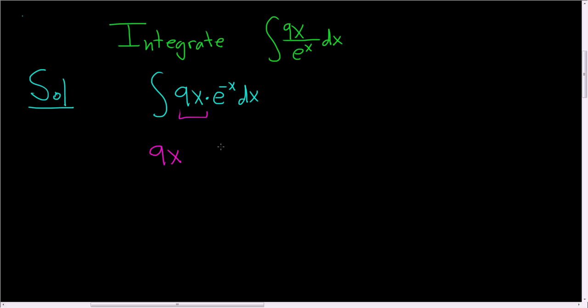So here we have 9x. And what's left over is what we're going to integrate. So we're going to integrate e to the negative x. This piece here we're going to differentiate and this piece here we're going to integrate.